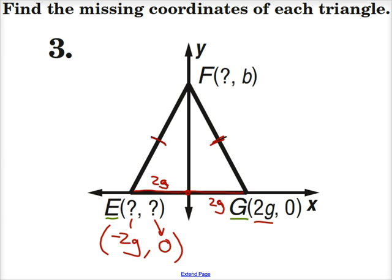Now to find the x-coordinate for F, I see that that point lies on the y-coordinate. In other words, its x-value, its x-coordinate, must be 0. And so the coordinates for point F would be 0, b.